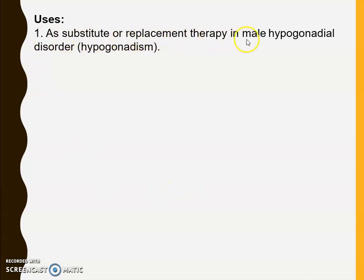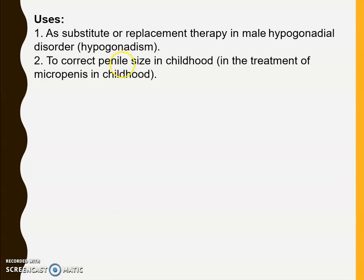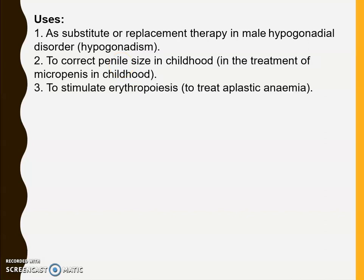Uses: It is used as a substitute or replacement therapy in male hypogonadal disorders — hypogonadism — where there is a failure of the gonads (testes) in men. Second, to correct penis size in childhood in the treatment of micropenis. Third, to stimulate erythropoiesis to treat aplastic anemia, where there is a lack of production of RBCs. It is also used for muscle development due to its anabolic properties.